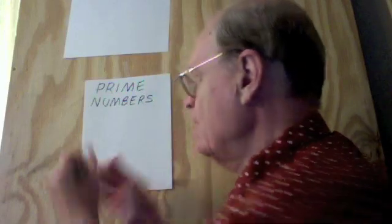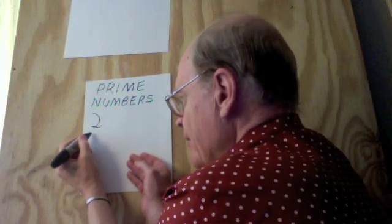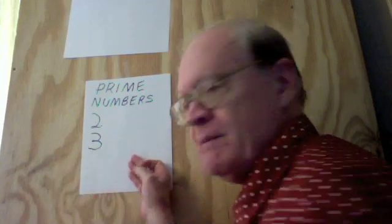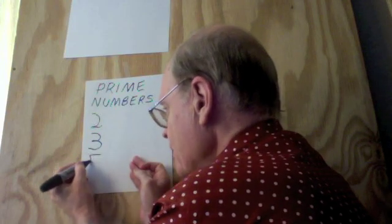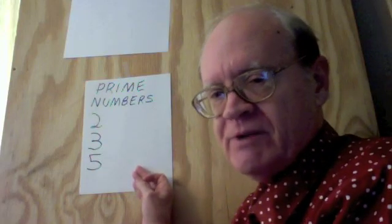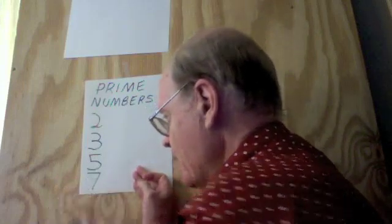The first one is 2, because 2 is just 2 times 1. 3 also, just 3 times 1. 4 isn't, because 4 is 2 times 2. 5 is prime, because it's only 5 times 1. 6 isn't, because it's 2 times 3. 7 is, because it's 7 times 1 only.